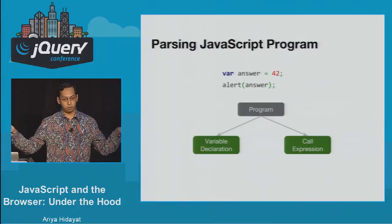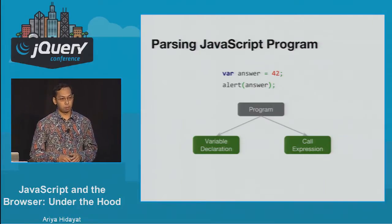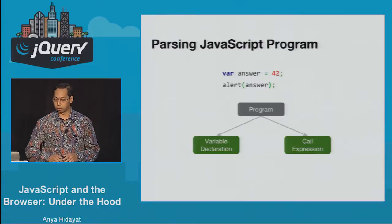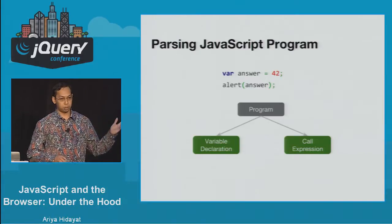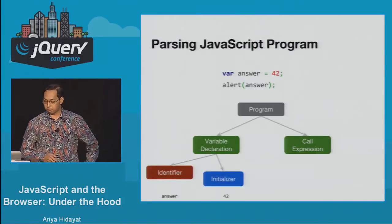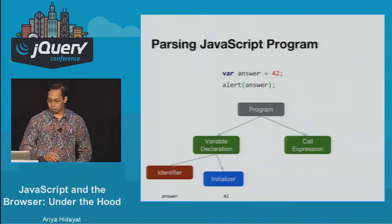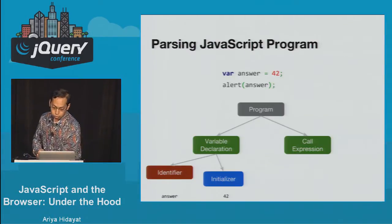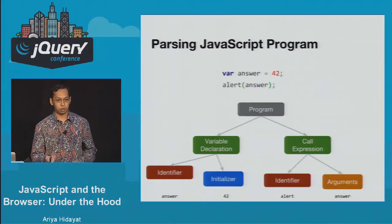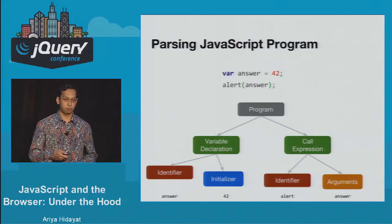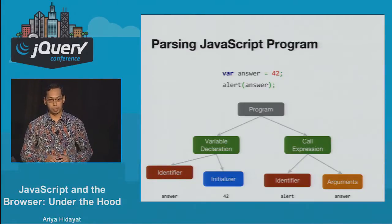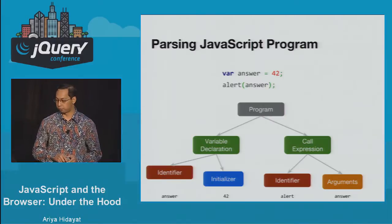If you have hundreds of lines, the program node can have hundreds of child nodes. The variable declaration has the same structure as the previous example. The call expression also needs additional information: what function needs to be called and what values need to be passed — those are called the identifier and the arguments, respectively.